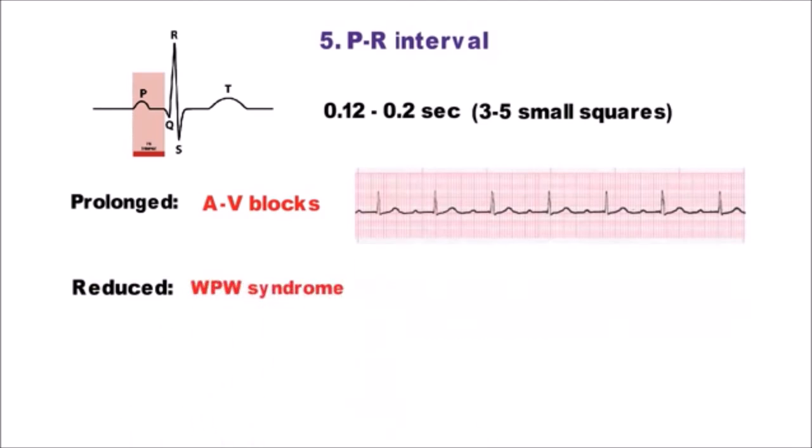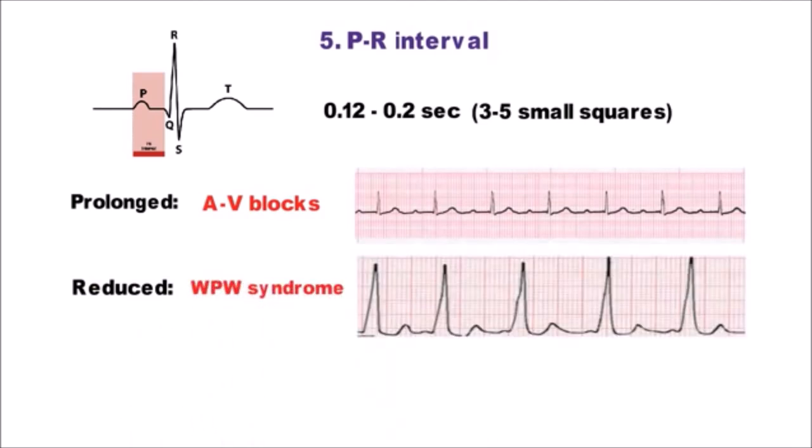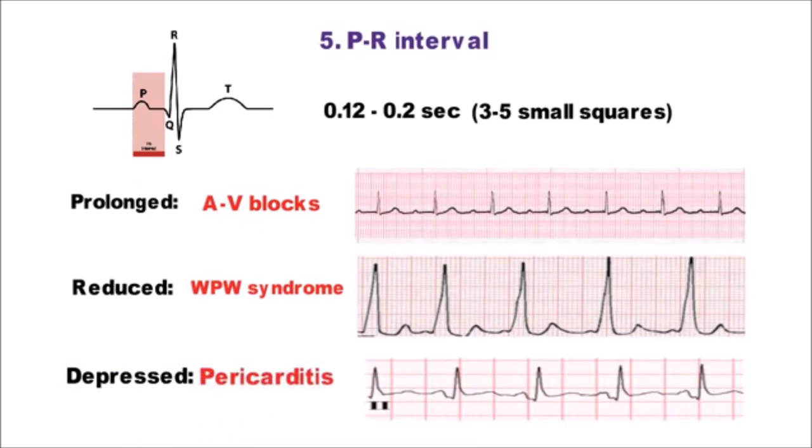Reduced in WPW syndrome in which there is an accessory pathway which conducts impulses faster than the normal, producing shorter PR interval. And PR interval is depressed in pericarditis cases.